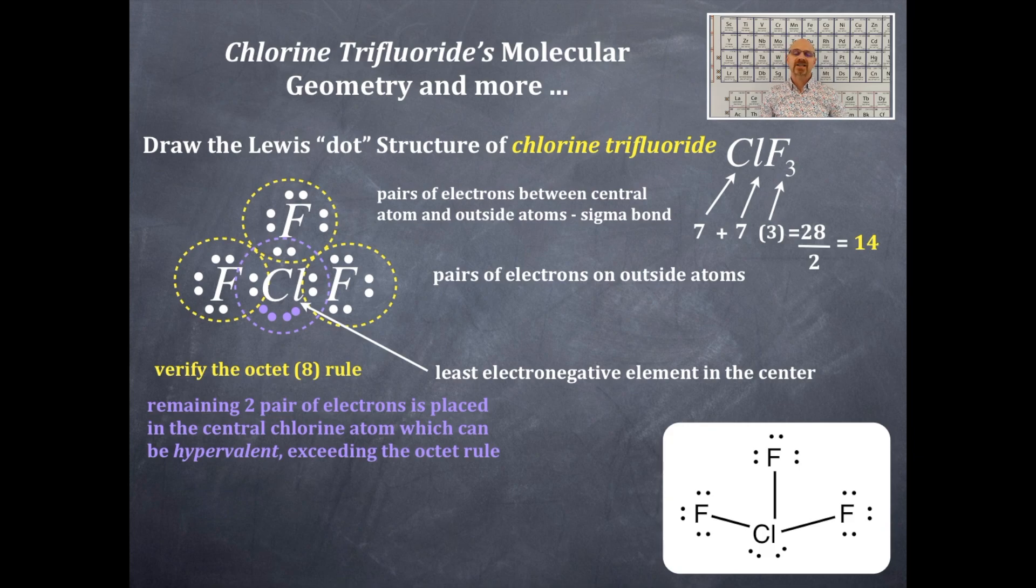Now we're going to get that AX geometry here. It's A for the chlorine in the middle, X₃ because there's three fluorines, and E₂ for the two pairs of electrons on the central chlorine. That's AX₃E₂, three bonding and two non-bonding domains.